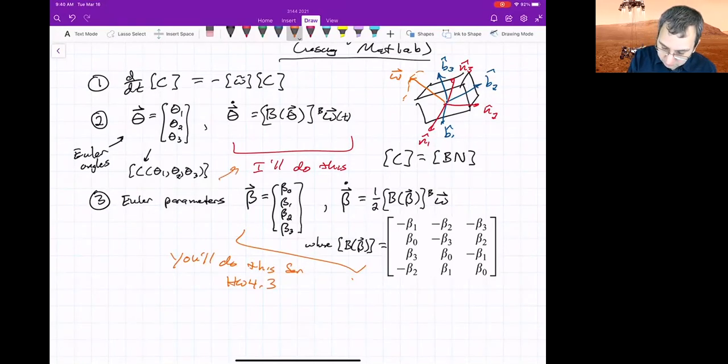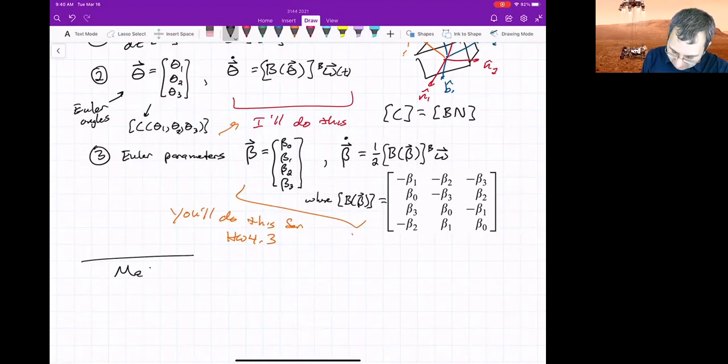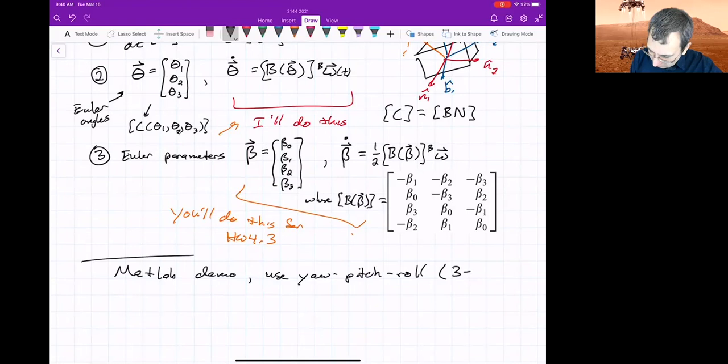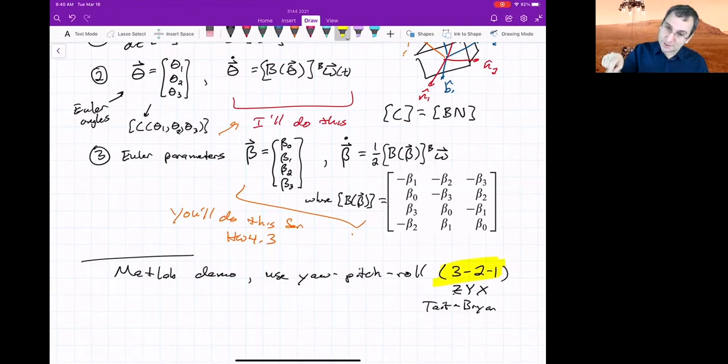I'm going to demonstrate this one now using MATLAB. MATLAB demo. I'll use Yaw, Pitch, and Roll. So that means the three, two, one convention in the naming of the book. Some people might call it ZYX or Tate-Bryan. I don't know why they keep making up new names, but you will hopefully forever remember it as three, two, one, because that makes sense. You rotate about the number three through some angle and then the new number two and then the new number one.